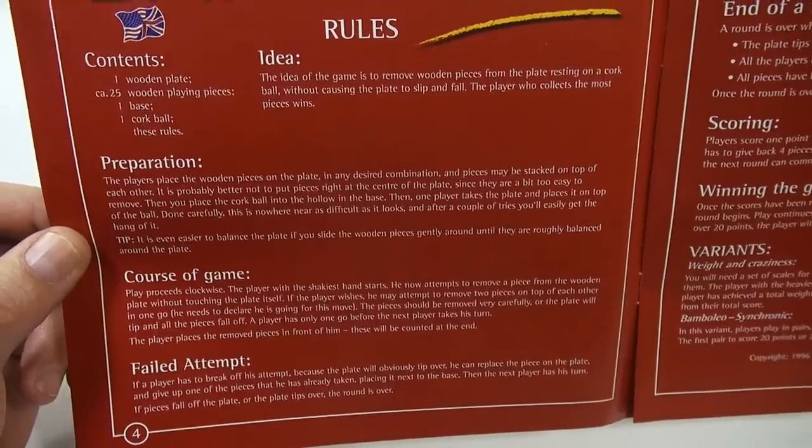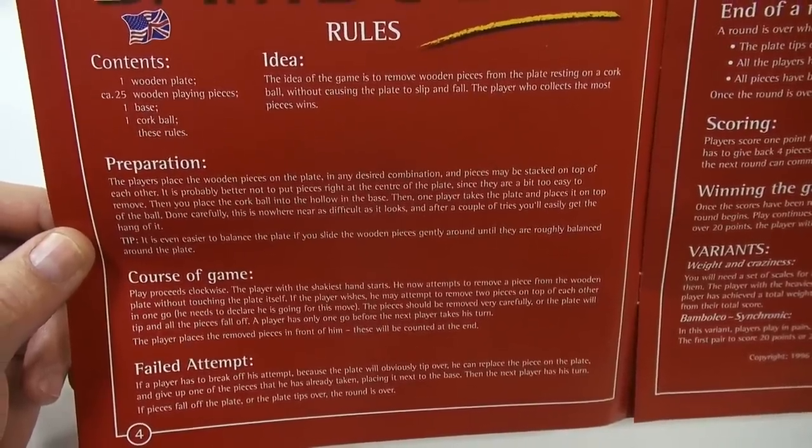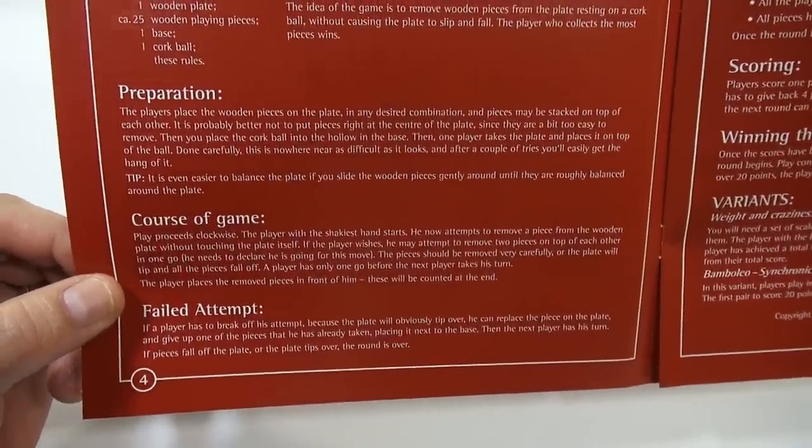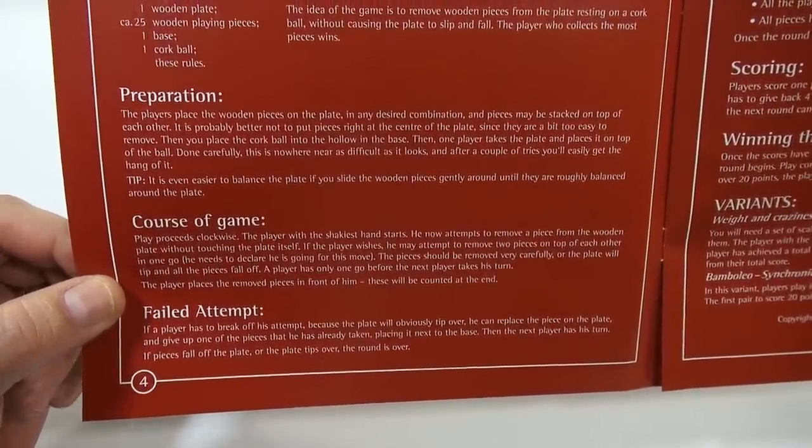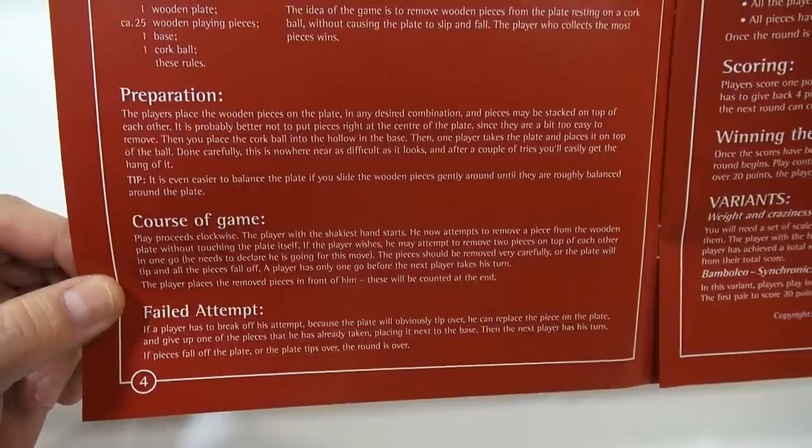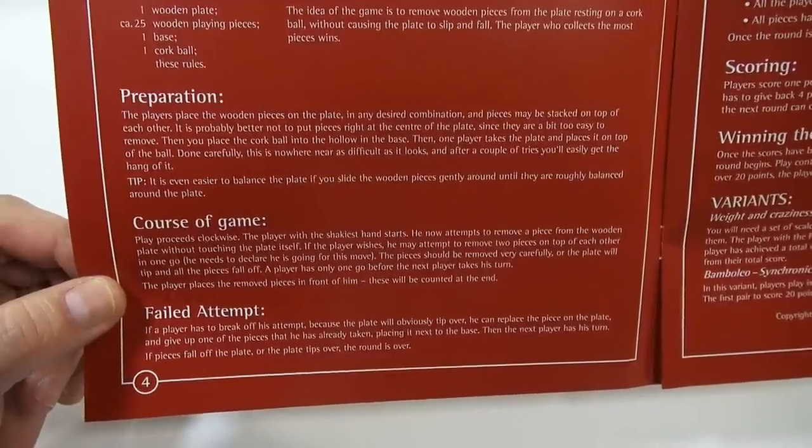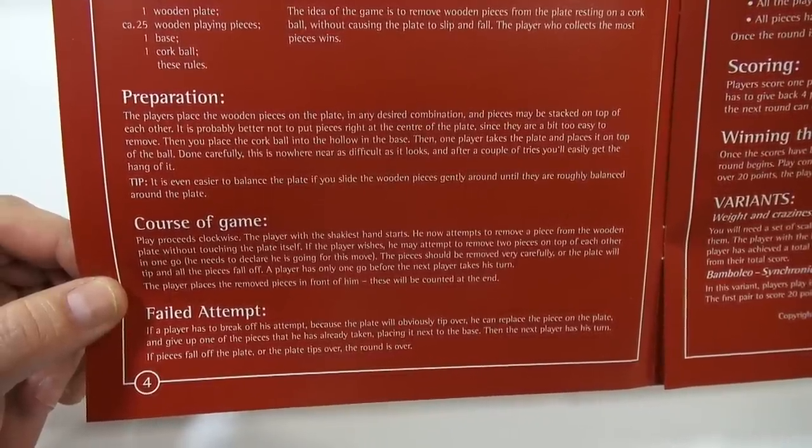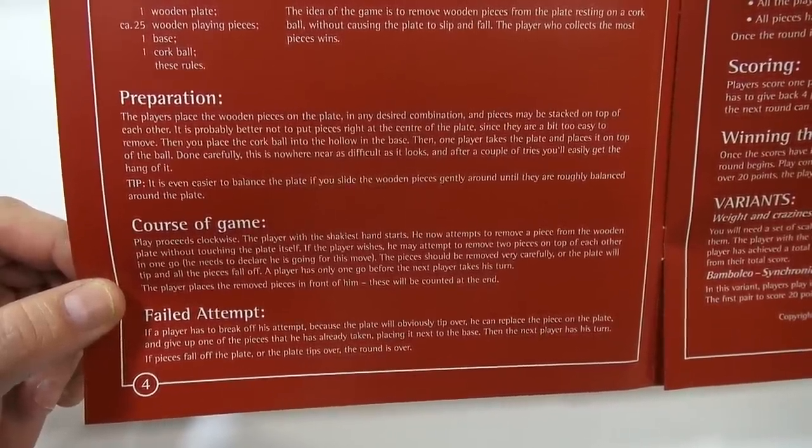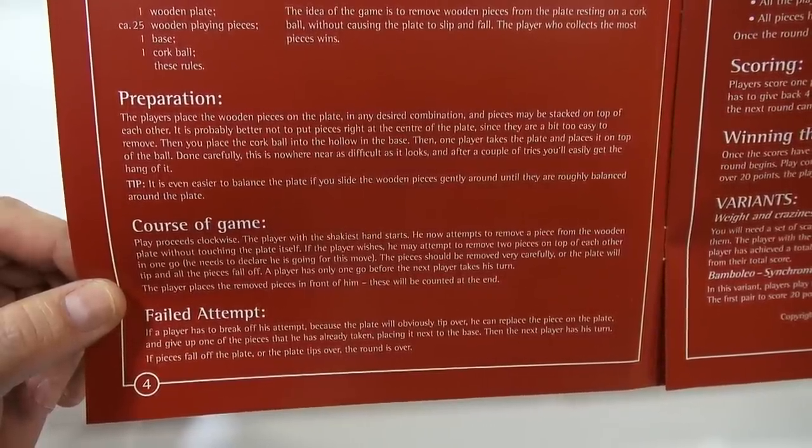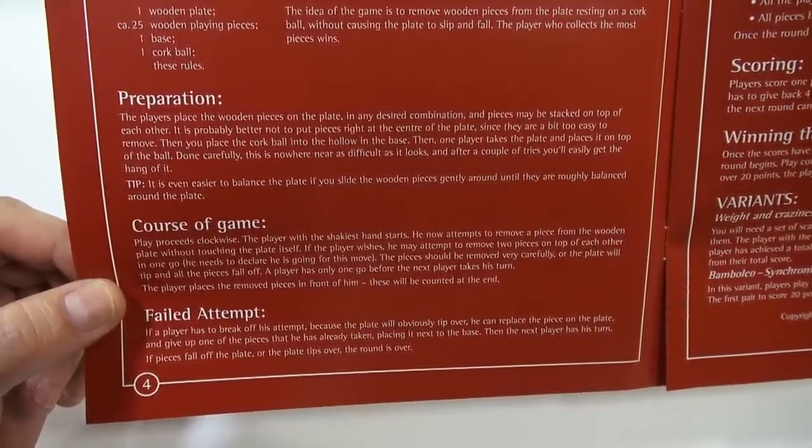It is even easier to balance the plate if you slide the wooden pieces gently around until they are roughly balanced around the plate. Course of the game: play proceeds clockwise. The player with the shakiest hand starts. He now attempts to remove a piece from the wooden plate without touching the plate itself. If the player wishes, he may attempt to remove two pieces on top of each other in one go. He needs to declare he is going for this move.